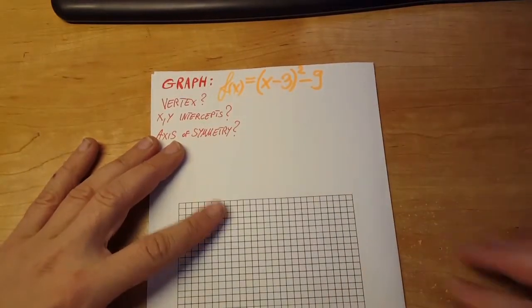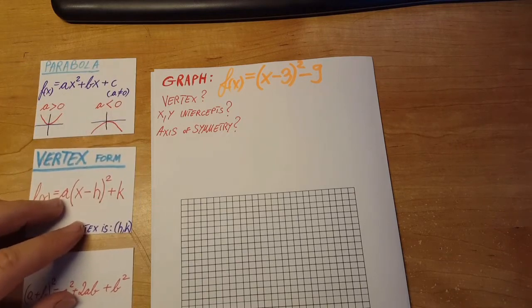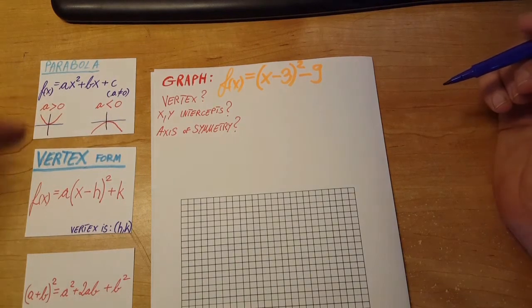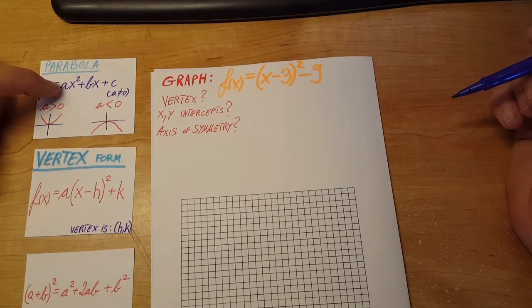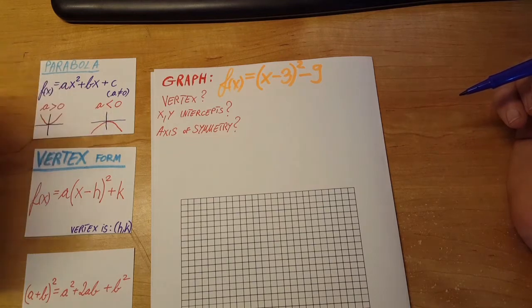Alright, first let's start by analyzing is this parabola going to open up or down. From our formulas, we can see that a, if it's bigger than 0, it will open up. If a is smaller than 0, it opens down.